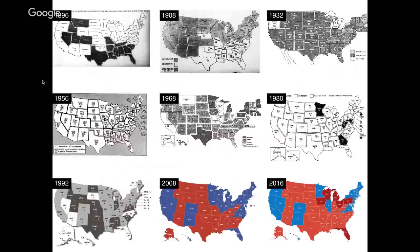This is one type of election map that the New York Times has been using since at least 1896. It's a map of the United States shaded to show which candidates won each state. It's really great for quickly and accurately reporting election results because it's really accessible. It's an iconic design that's been around for a really long time, based on a geography that most Americans are really familiar with. So it's really easy for people to quickly locate a specific place, like the state where they live, and see who won there.